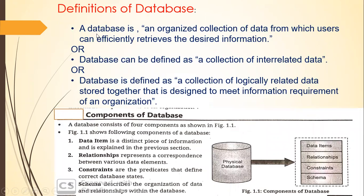We can define the database in three different ways. First, a database is an organized collection of data from which a user can efficiently retrieve desired information. Second, a database can be defined as a collection of interrelated data. Third, a database can be defined as a collection of logically related data stored together, designed to meet the information requirements of an organization. The meaning of all three definitions relates to interrelated or logically related data.